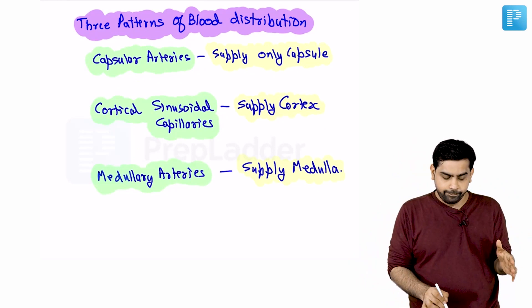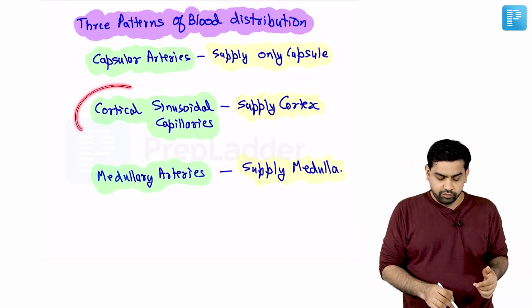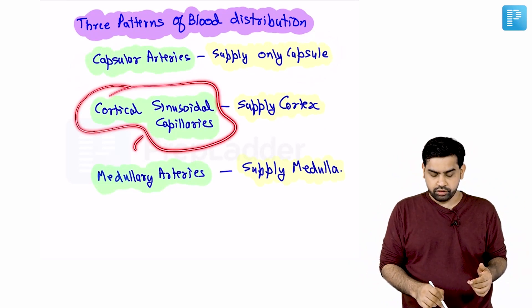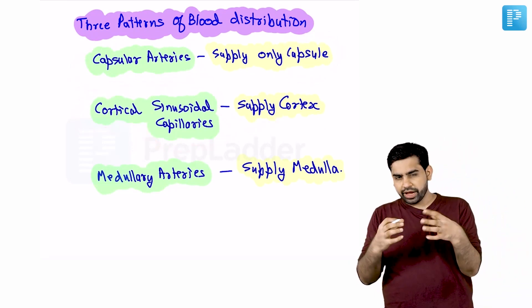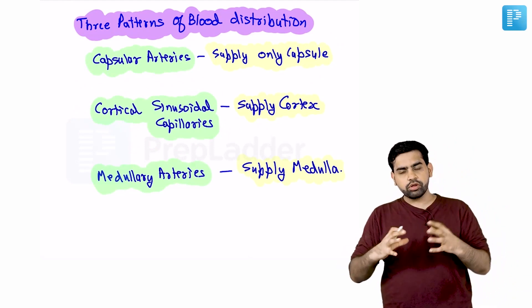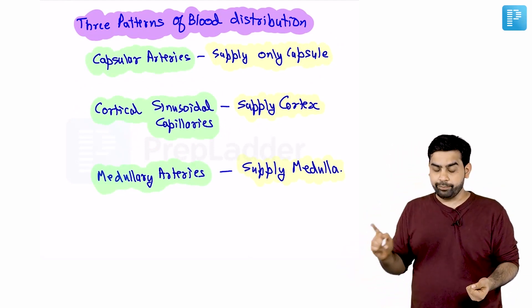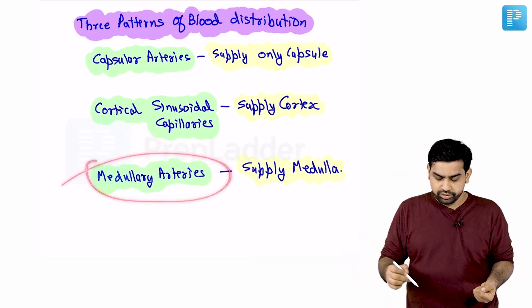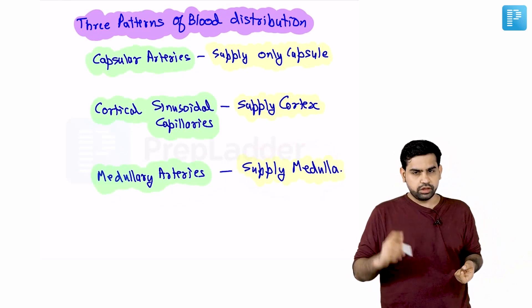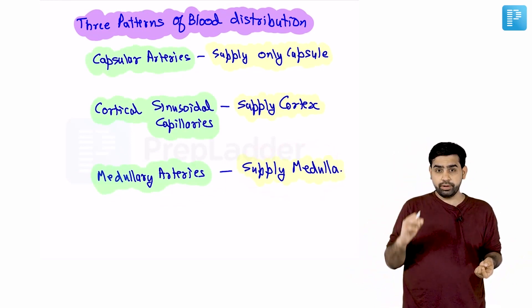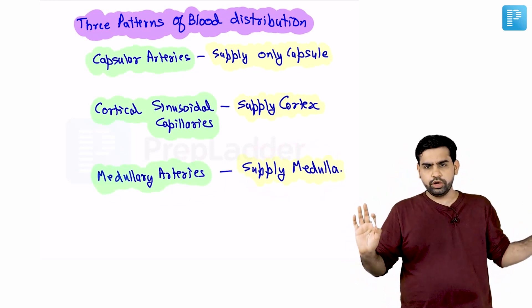There are three patterns of blood distribution in the adrenal gland. First, the capsular arteries supply the capsule. Second, the cortical sinusoidal capillaries supply the cortex — they form sinusoidal spaces inside the cortex. Third, medullary arteries directly supply the medulla. So there is a different blood supply for the capsule, the cortex, and the medulla.